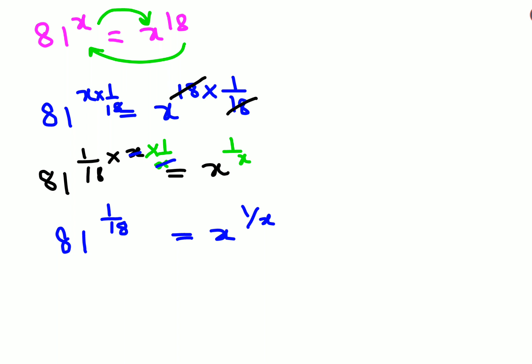Now students, please understand here what we can do is instead of 81, I can write this 81 as nothing but 9 square, the whole raised to 1 upon 18, and here it is equals to x raised to 1 upon x.